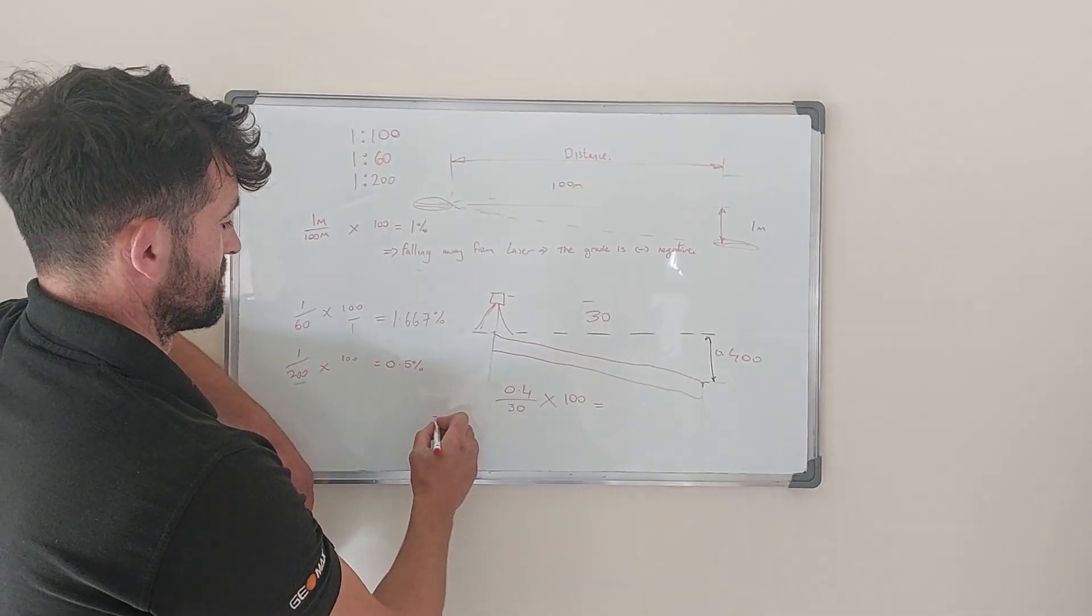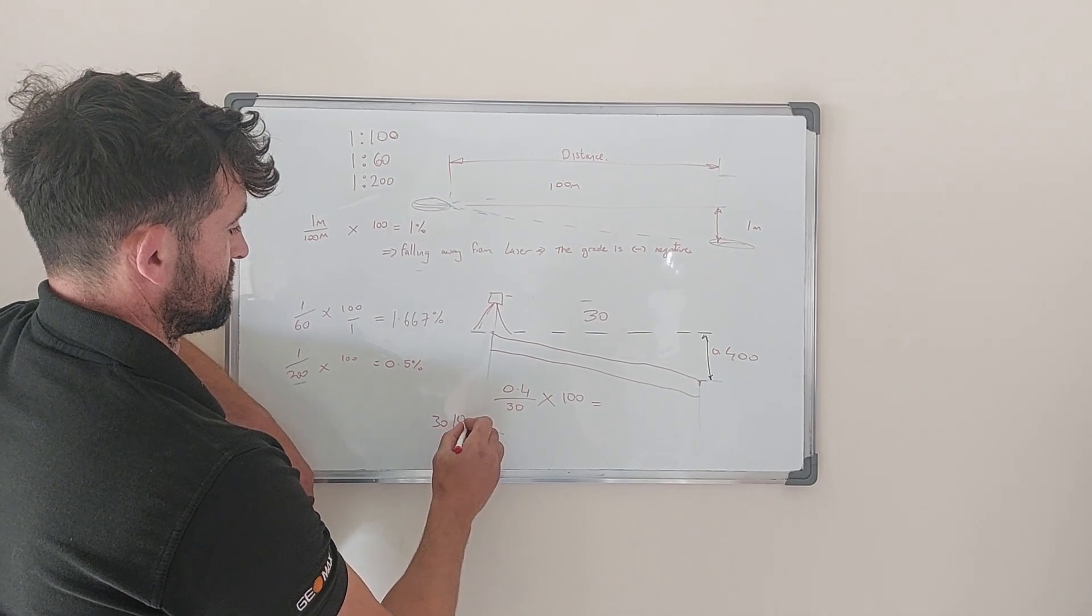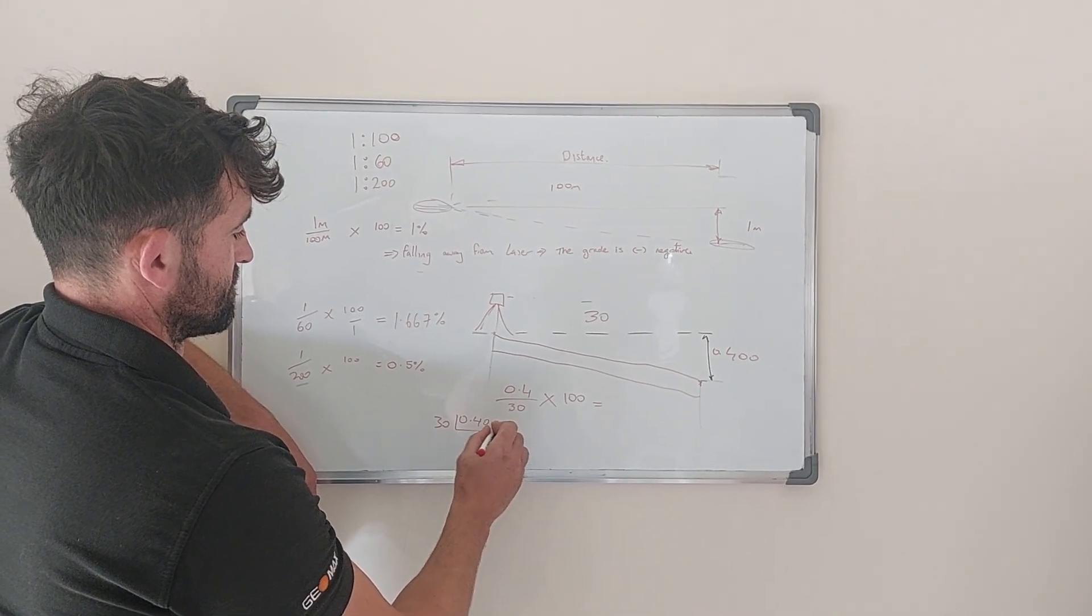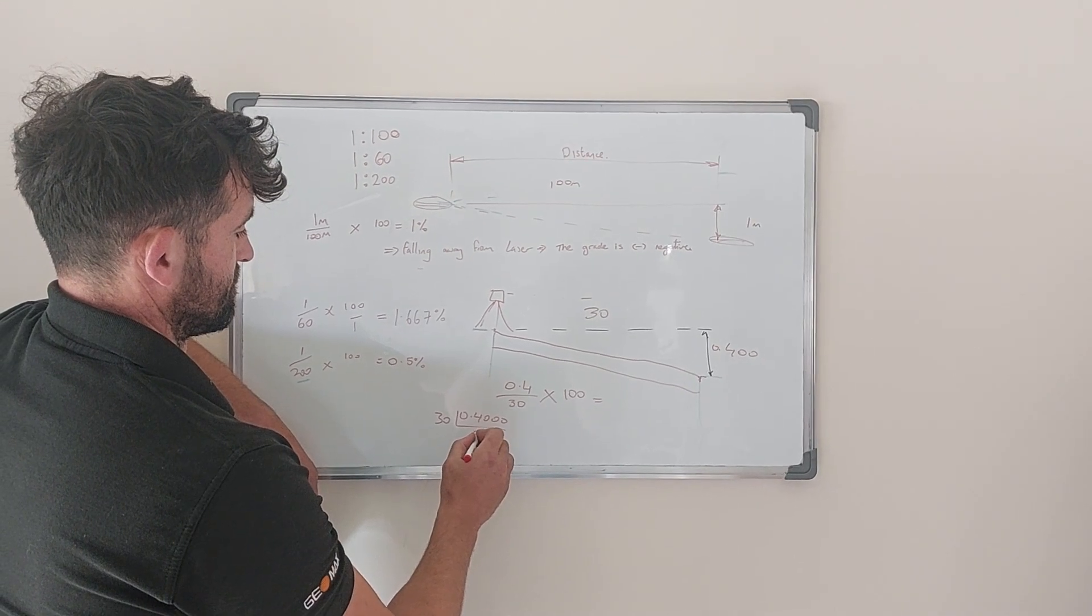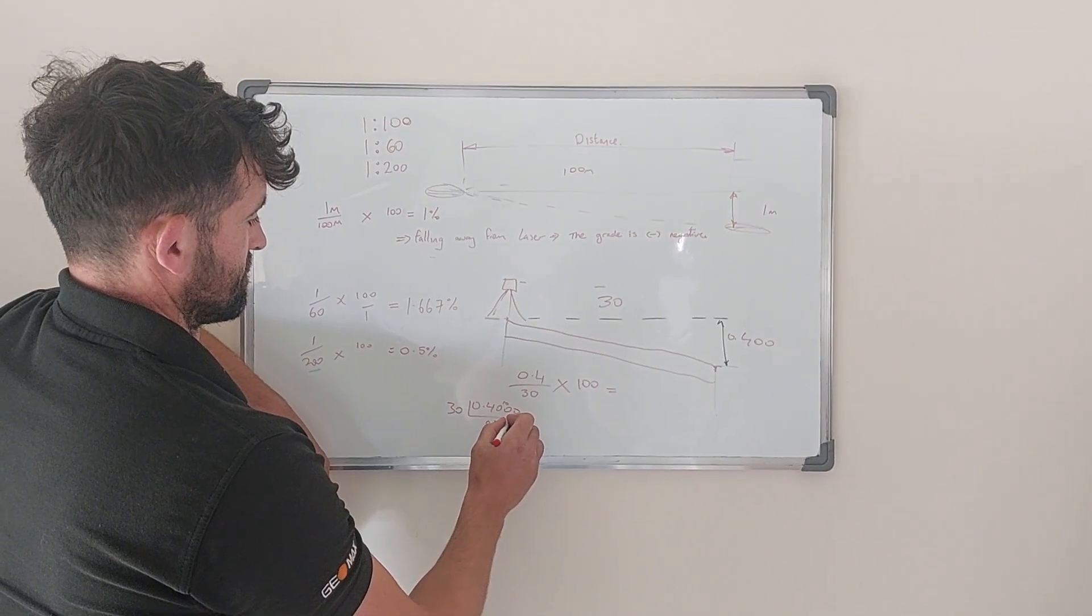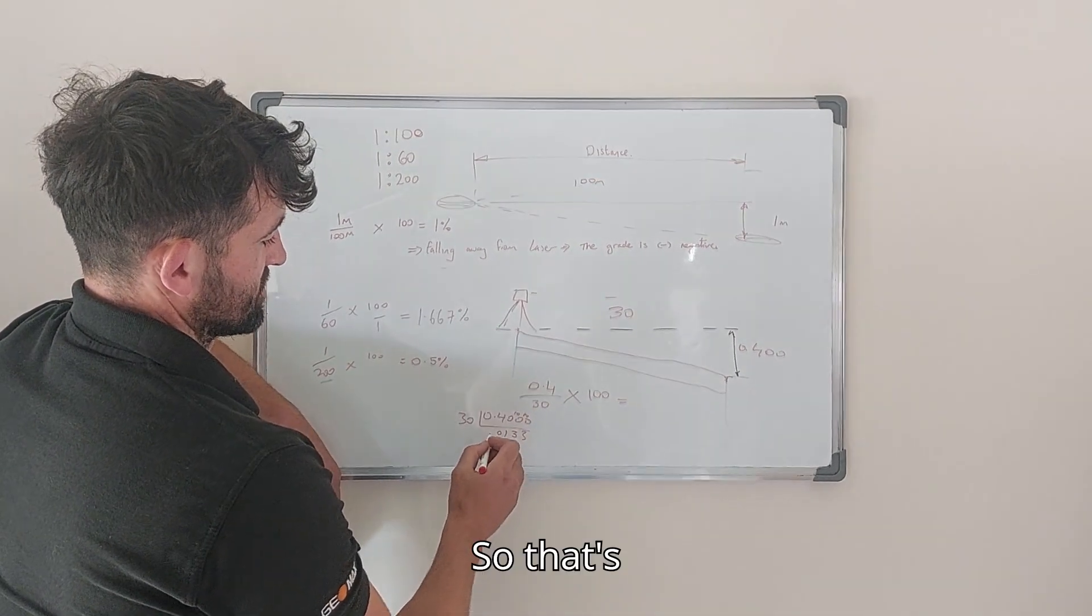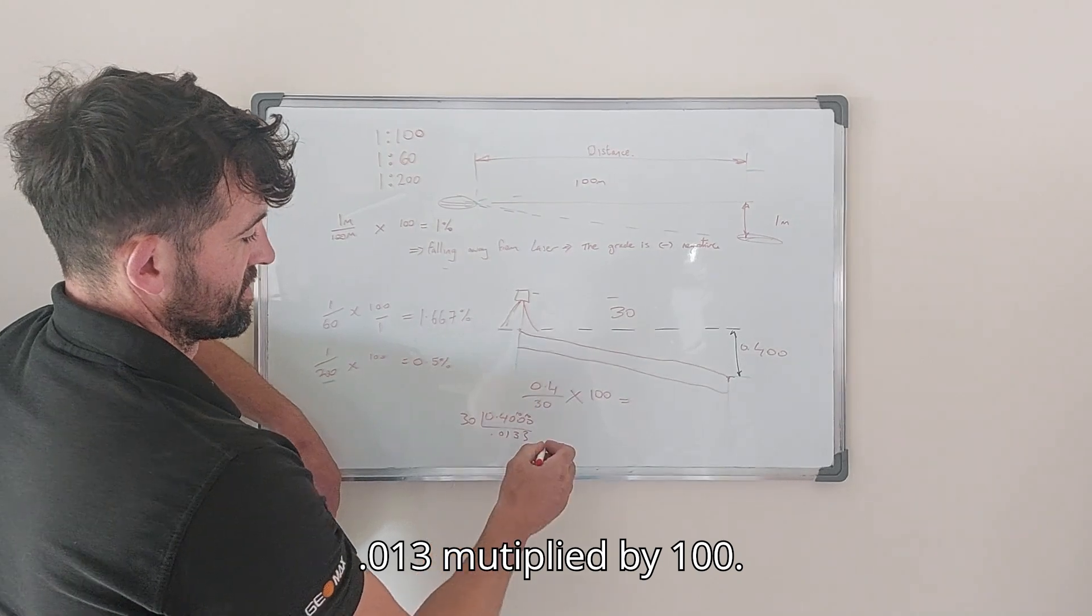So on hand, that's 0.013 multiplied by 100.